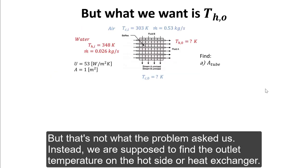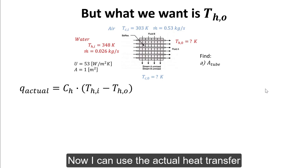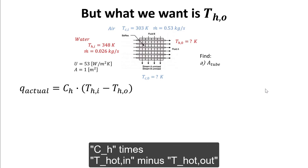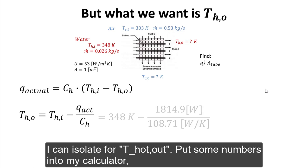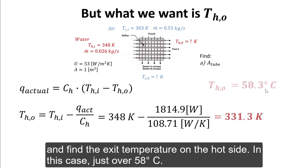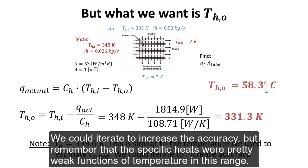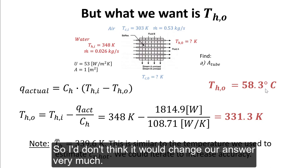But that's not what the problem asked. Instead, we're supposed to find the outlet temperature on the hot side. I can use the actual heat transfer — Q equals big C on the hot side times (T hot in minus T hot out) — isolate for T hot out, put the numbers into my calculator, and find the exit temperature on the hot side is just over 58 degrees Celsius. Note that I had to assume the outlet temperature in order to find Cp, and it's pretty close to our estimate. We could iterate to increase accuracy, but the specific heats were pretty weak functions of temperature in this range, so it wouldn't change our answer very much.